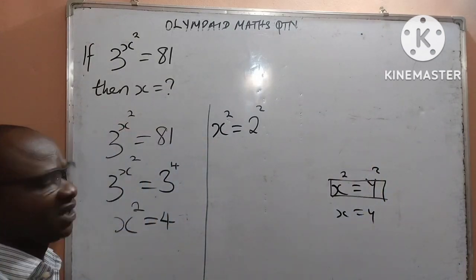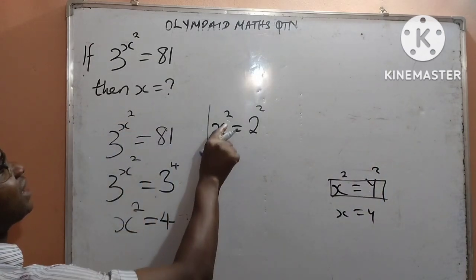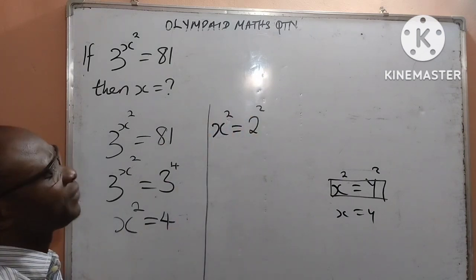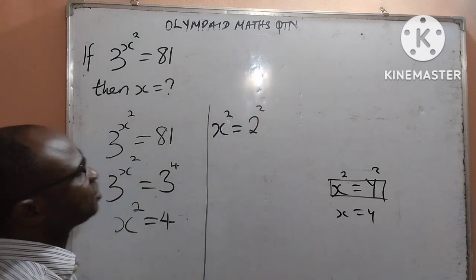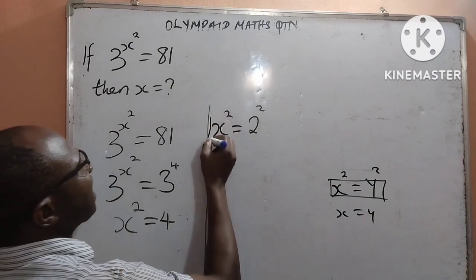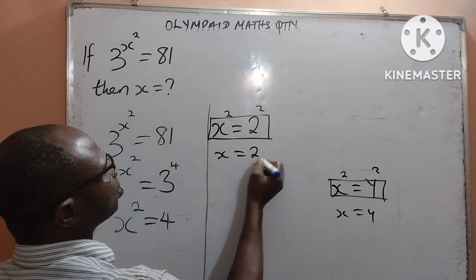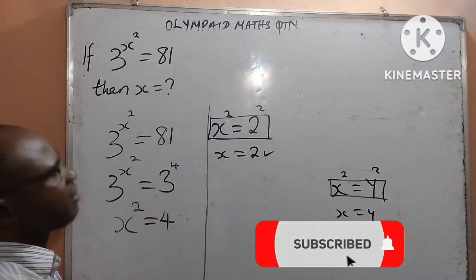So we go by this law of indices to now see that the powers here are equal to the left. I have power of 2 and by the right I have power of 2. Automatically, that implies that my bases are equal. So x is equal to 2. Final answer.